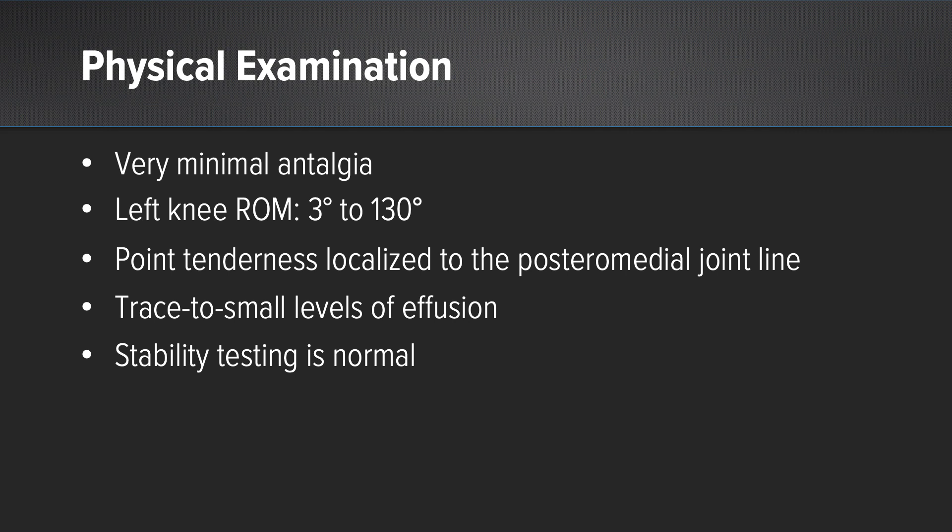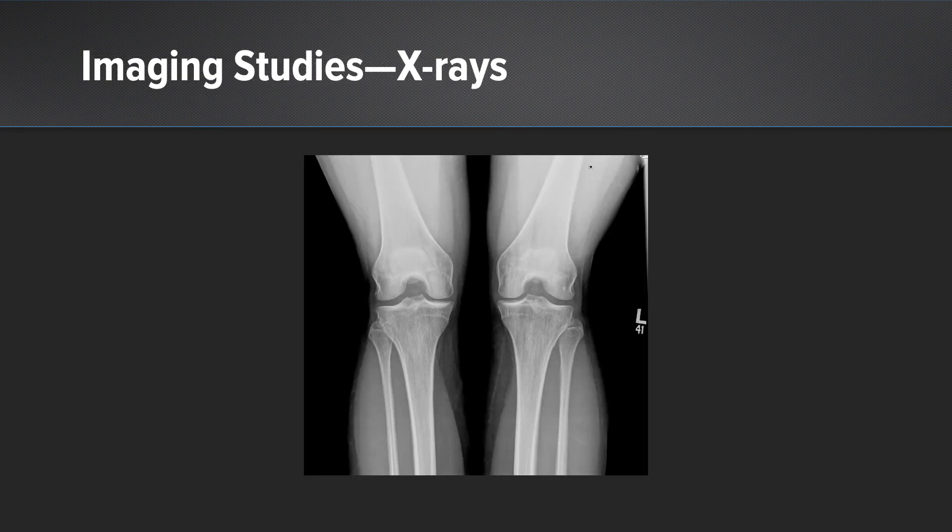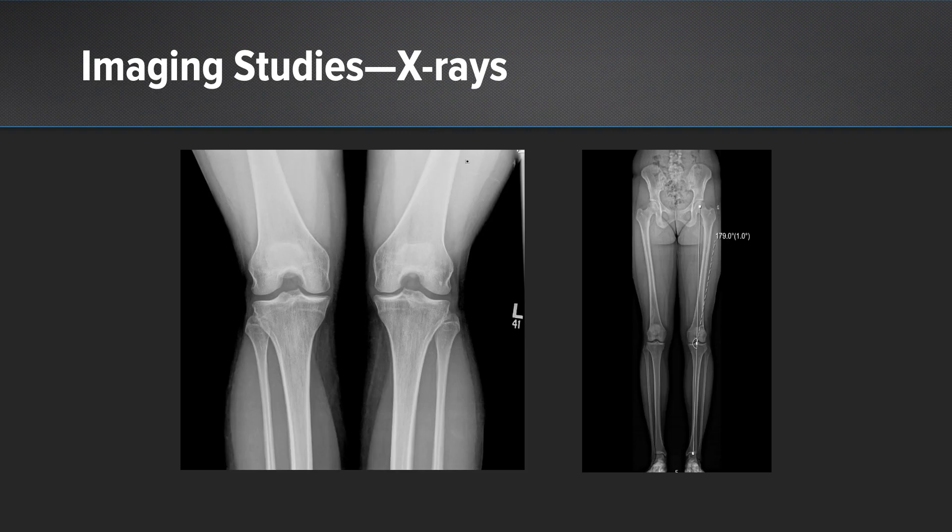On physical examination, she had very minimal entalgia. Her left knee range of motion was 3 to 130 degrees. Point tenderness localized to the posteromedial joint line. She had a trace to small effusion, and stability testing was normal. These are her x-rays, which show that the joint spaces were well-maintained.